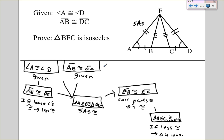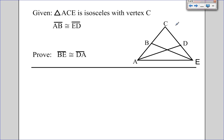Let's move on to another proof. Remember: when you start with base angles, before you can say a triangle is isosceles, you must first say that the legs are congruent. Or if you start with an isosceles triangle with legs, you can then go to the base angles. So you have to start with legs first whenever you're given isosceles. Pause and try it out.